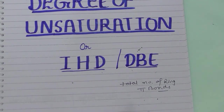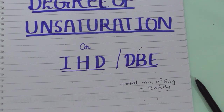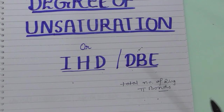We will not get the direct structure; we can get some possible structures of the particular compound. It will just give an idea about a specific number of rings or double bonds — maybe one pi bond, or a triple bond which means two pi bonds. Finally, you can verify the exact structure with NMR spectroscopy.